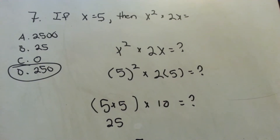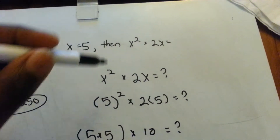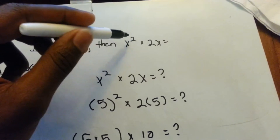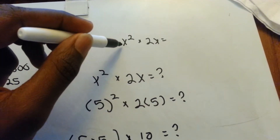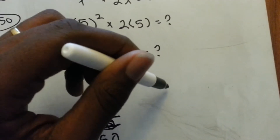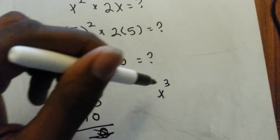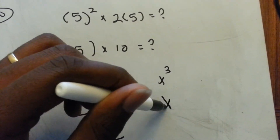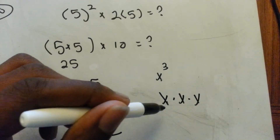It's just substitution, and remembering that with exponents, whatever that little number on top is, that means how many times you're going to be multiplying x by itself. So if we have x to the third, or x cubed, that means multiplying x times x times x.